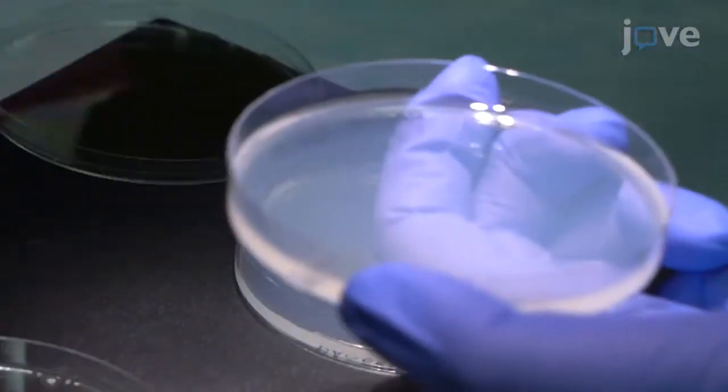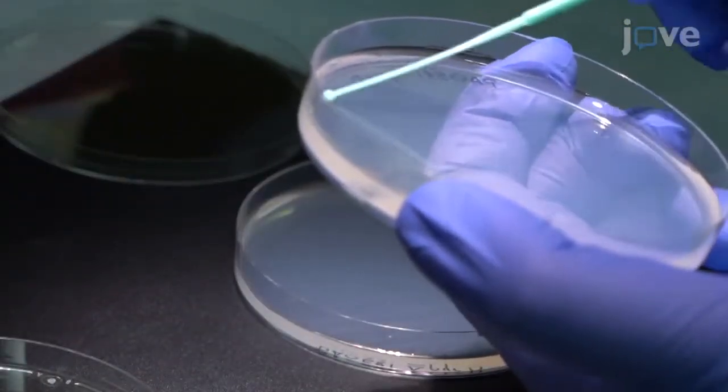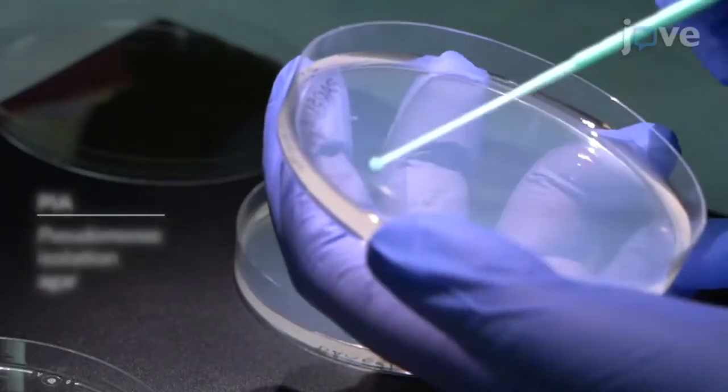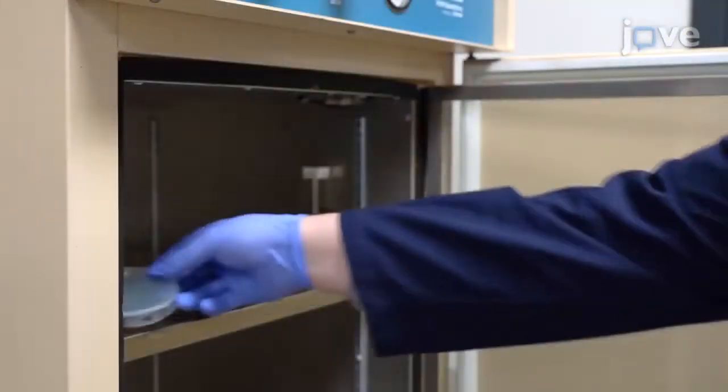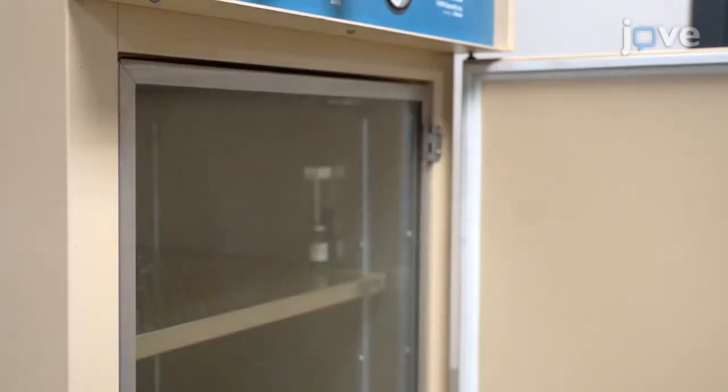To detect the small colony variant, or SCV, first treat the P. aeruginosa strain PAO-1-delta-PYRD on pre-warmed PIA plates. Grow the strains at 37 degrees Celsius for 48 hours.